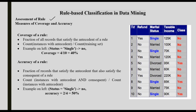We will use two calculations to assess rules: coverage and accuracy. Coverage of a rule is the fraction of all records that satisfy the antecedent of a rule. Now let's look at an example.